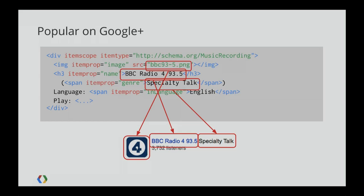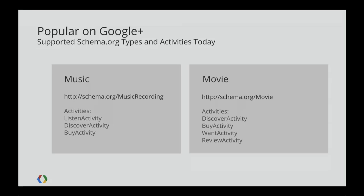Schema.org is an incredibly powerful technique that extends well beyond the Popular on Google Plus box — I suggest you take a look at it as it will continue to pay dividends over time. Today, Popular on Google Plus supports two different types of schema.org markup corresponding to the music and movies verticals. For music, the schema.org type is MusicRecording, and users can listen, discover, or buy. For movies, discover, buy, want, and review are the applicable activities. The team is working to expand the types of entities understood and represent them in a more fluid, meaningful way.